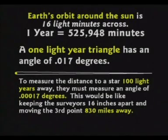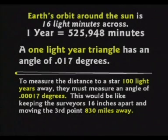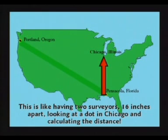If you set that up and draw it out on a piece of graph paper, you've got a real skinny triangle. It works out to be an angle of 0.017 degrees at the apex. I think you'd have a hard time measuring something like that. That was just to measure one light year. If you wanted to measure 100 light years, you'd have to move your dot 830 miles away, keeping your surveyors 16 inches apart. That's like having two guys on my roof in Pensacola, Florida, looking at a dot in Chicago — a real skinny triangle. Figuring 15 billion light years is clearly impossible, and I don't think you can tell exactly where you were six months ago on opposite sides of Earth's orbit.